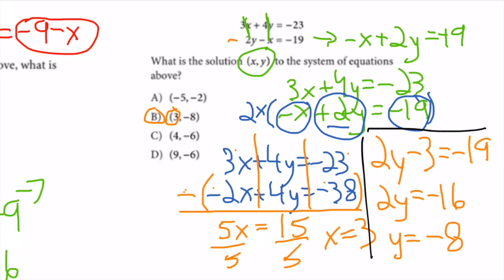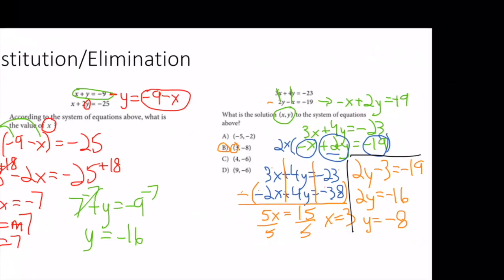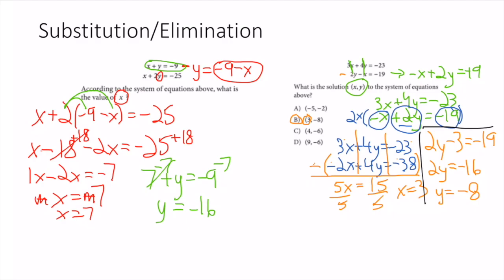Again I could have saved time just by noticing B was the only one with x = 3. But those are two examples of substitution and elimination. When we do practice tests on Tuesday we'll go through more.